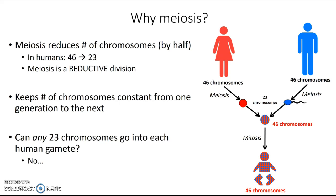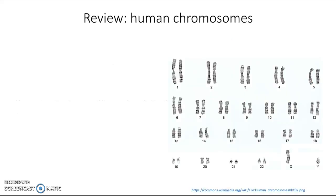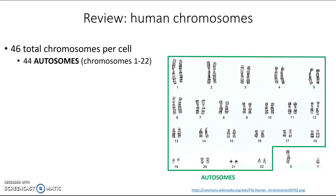Humans typically have 46 total chromosomes per cell. Of those 46, 44 are autosomes — chromosomes 1 through 22. These code for pretty much everything in your body: all the proteins you make, all the processes going on, all of your body parts.